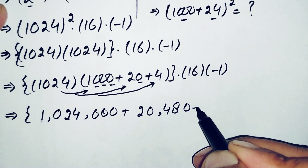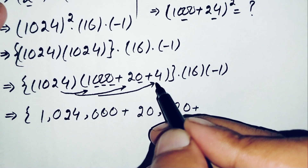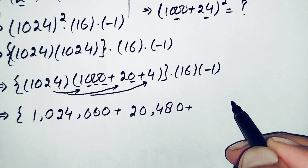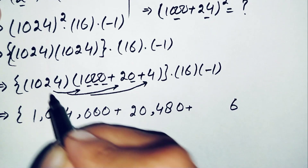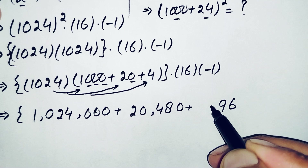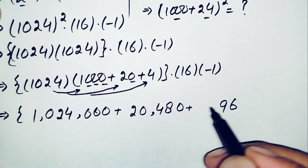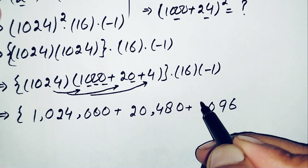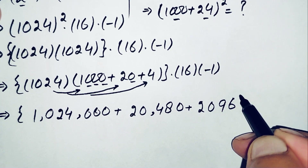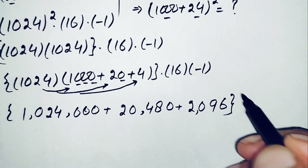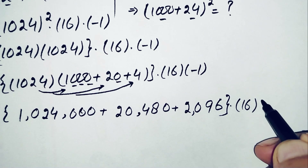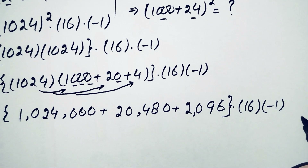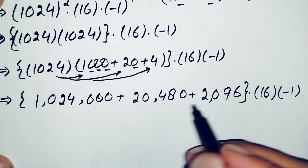Multiplying 1024 by 4: 4 times 4 is 16, carry 1; 4 times 2 is 8, plus 1 is 9; 4 times 0 is 0; 4 times 1 is 4. So 1024 times 4 equals 4,096. The expression is now 1,024,000 plus 20,480 plus 4,096, times 16 times negative 1.